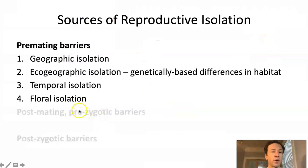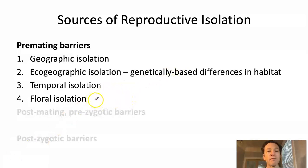The fourth pre-mating barrier is floral isolation. This is the case where plants develop different floral traits that are attractive to different pollinators. If pollinators stop flying between the two incipient species, pollen is not exchanged. As a result, they become genetically isolated and will continue evolving differences, eventually becoming different species.